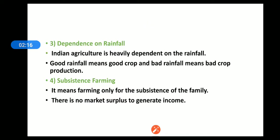Third feature is dependence on rainfall. Indian agriculture is heavily dependent on rainfall — good rainfall means good crop and bad rainfall means bad crop production. Dependency on rainfall is one of the key features of Indian agriculture. You might have heard that in Maharashtra or in the southern part of India, many farmers took their own lives — why? Because of the drought, because of less rainfall, and all these things adversely affect agriculture production.